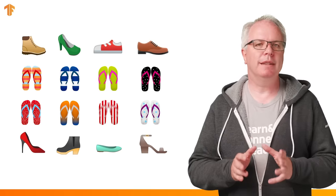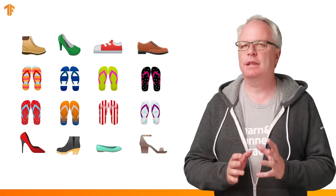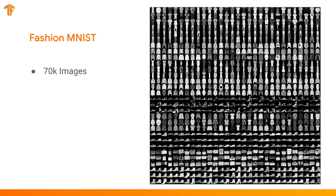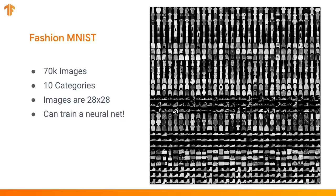And that's where the dataset called Fashion MNIST is useful. It has 70,000 images in 10 different categories, so there's 7,000 examples of each category, including shoes. Hopefully, seeing 7,000 shoes is enough for a computer to learn what a shoe looks like. The images in Fashion MNIST are only 28 by 28 pixels, so they're pretty small. And the less data used, the faster it is for a computer to process it.